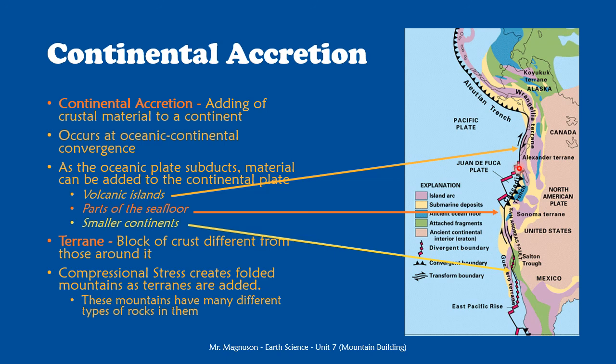Overall, we've learned about mountain-building processes that can produce volcanic and folded mountains at different types of convergent boundaries. We've learned about the production of fault-block mountains at different types of divergent boundaries. We've learned about the formation of uplifted and volcanic mountains at hotspots where there aren't plate boundaries. And we've also learned about how folded mountains can form as continents are increased in size through the process of continental accretion.